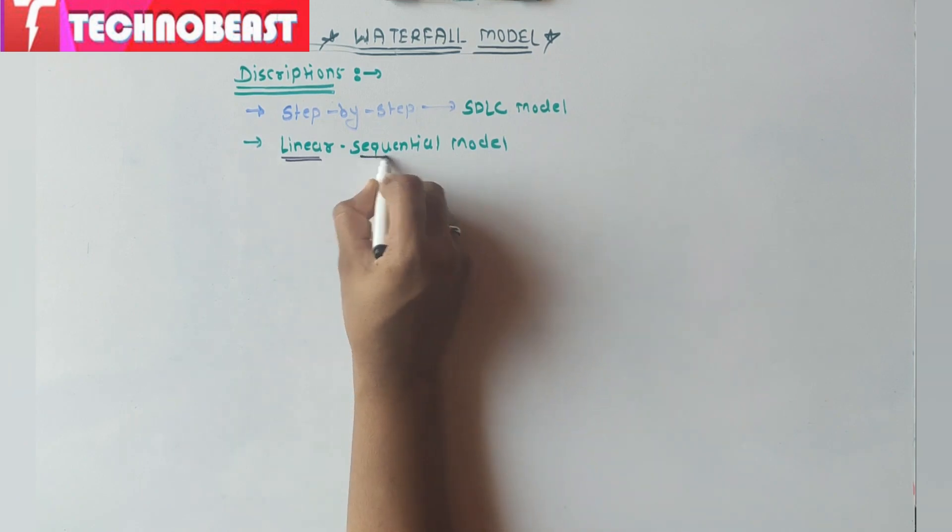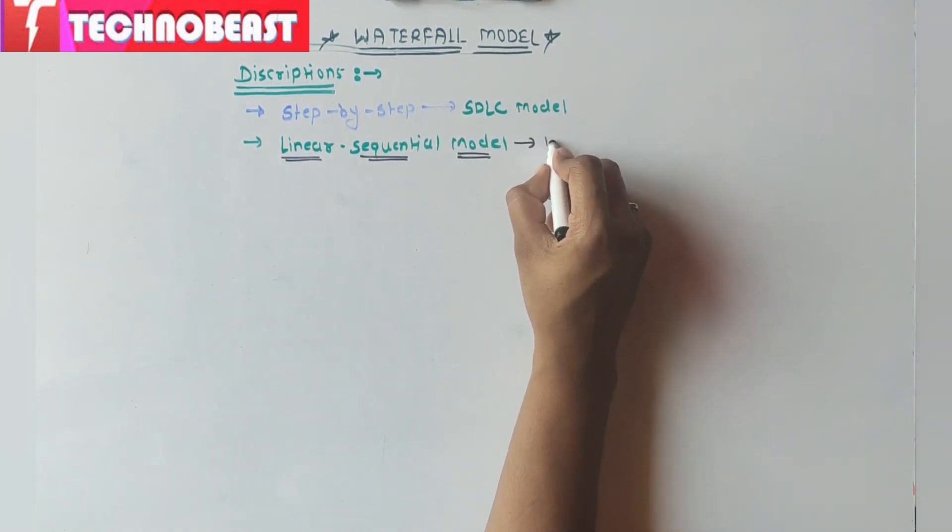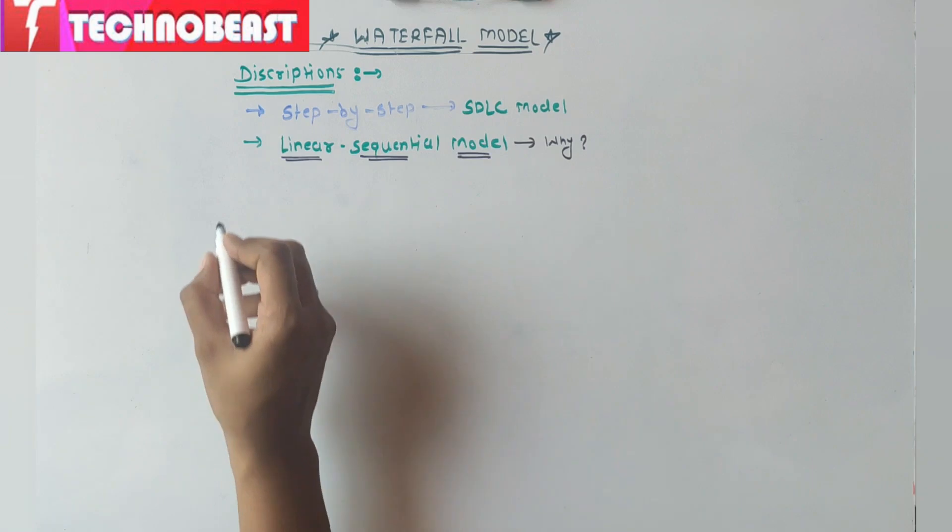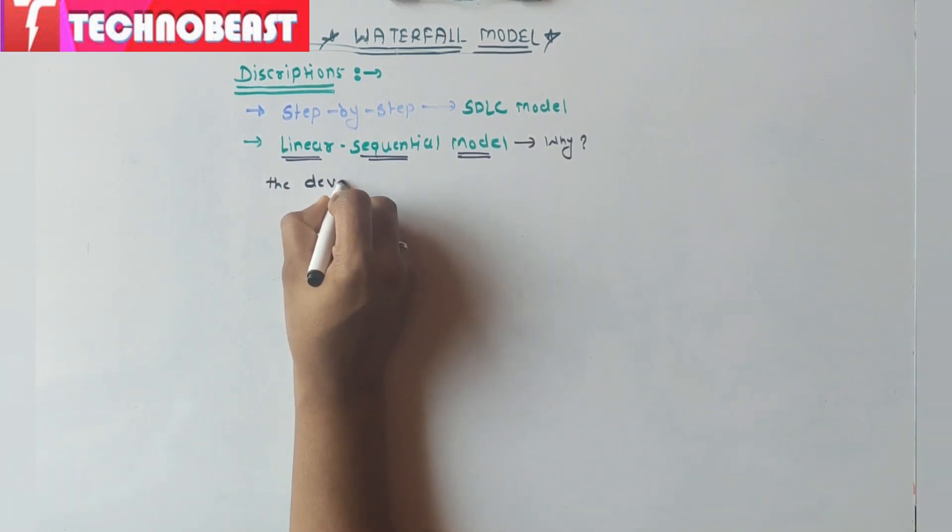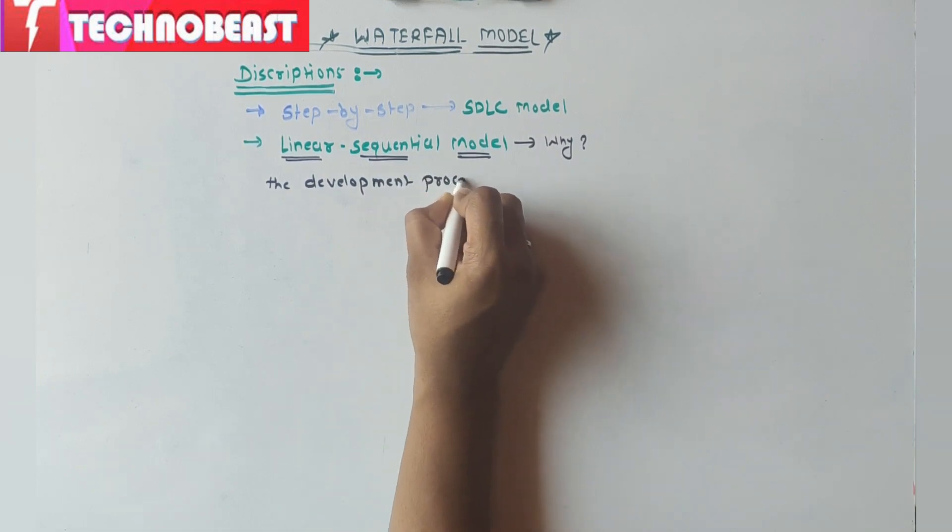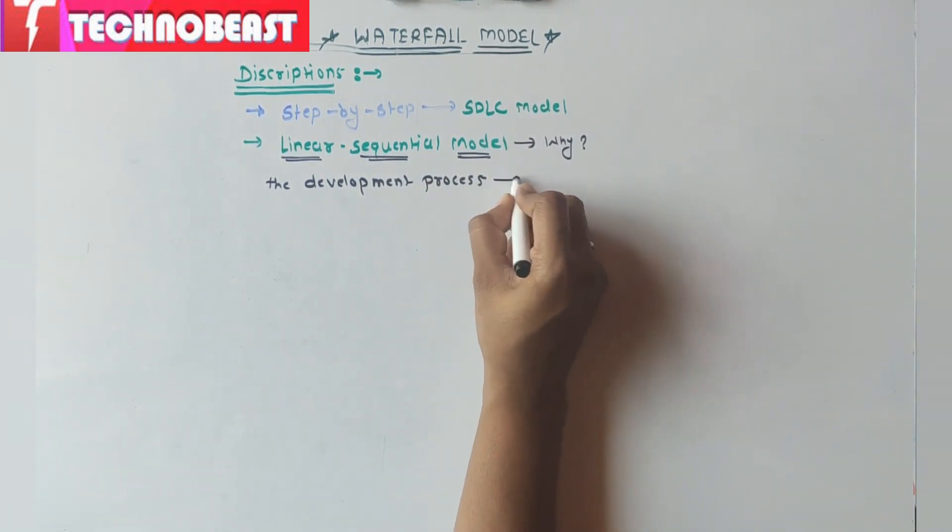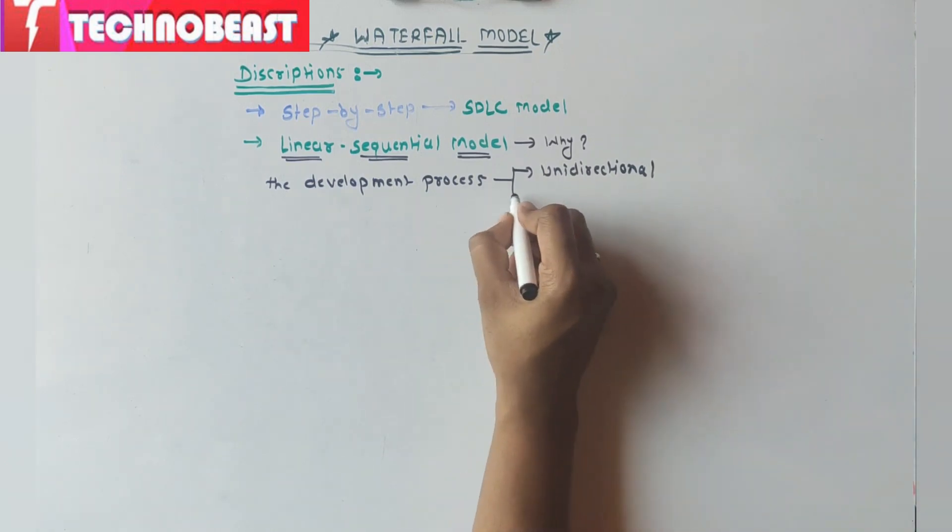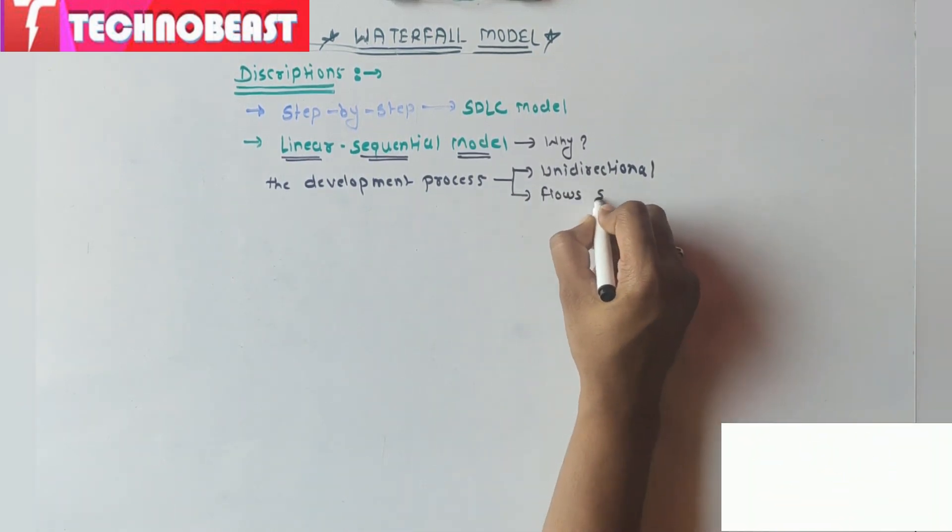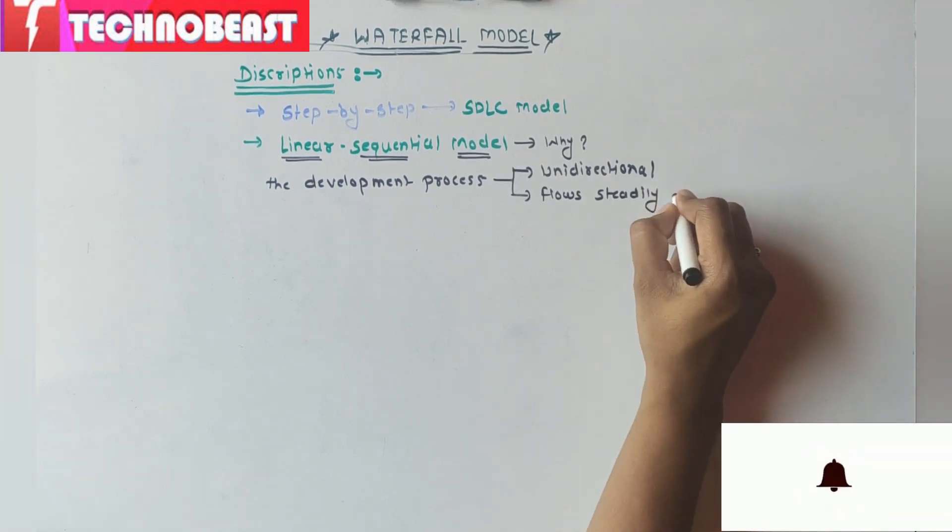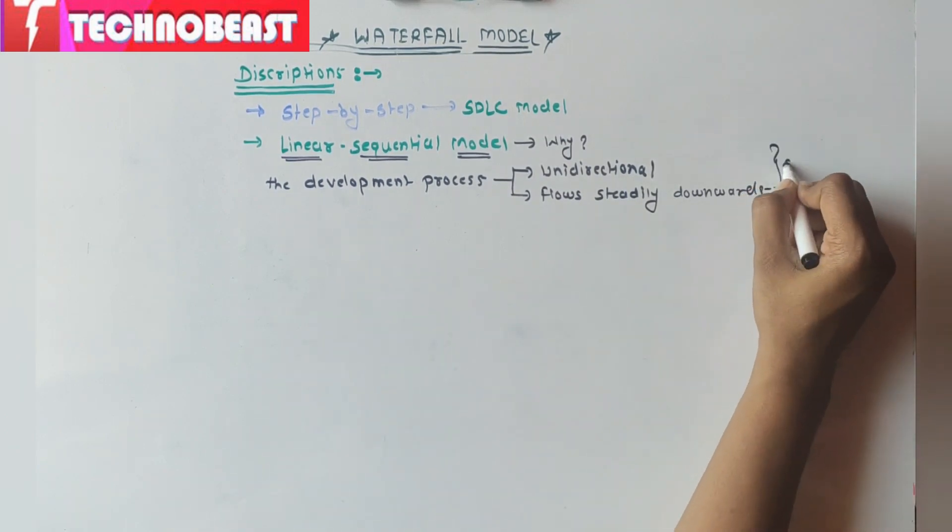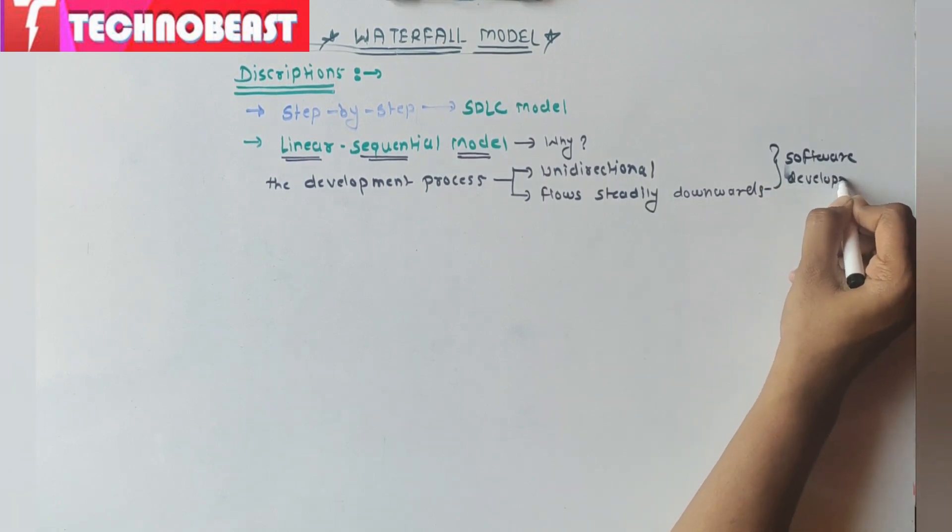Now why we call it as a linear sequential model? The answer is the development process is usually unidirectional and flows steadily downwards through the different phases of software development. That's why we call it a waterfall model or linear sequential model.